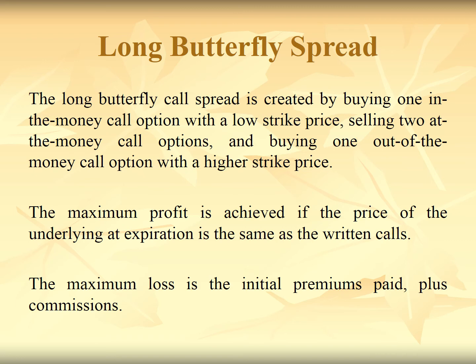Butterfly spreads can be studied under two heads: the long butterfly spread and the short butterfly spread. The long butterfly spread is created by buying one in-the-money or at-the-money call option with a low strike price, selling two at-the-money call options, and buying one out-of-the-money call option with the higher strike price. Maximum profit is gained if the price of the underlying at expiration is the same as the sold calls; the maximum loss is the initial premium paid plus commission.